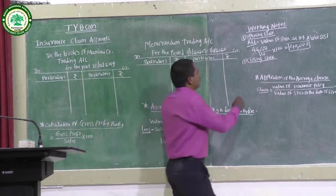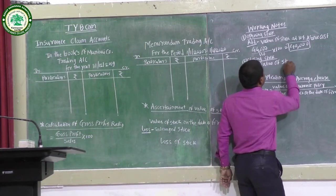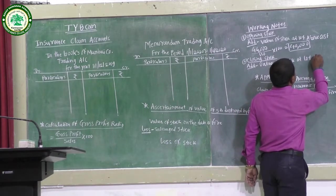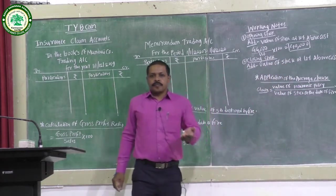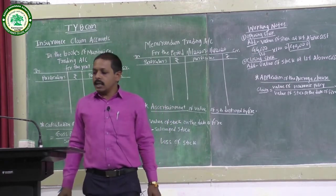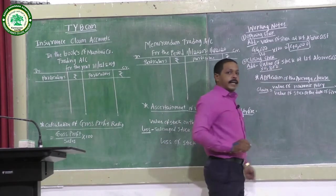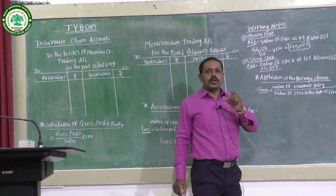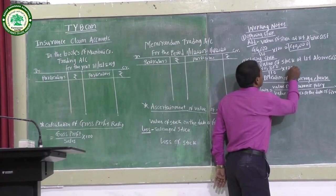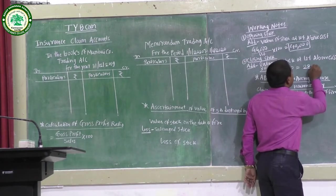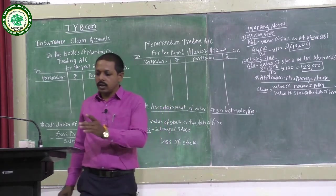Similarly, the closing stock is valued at 10% above cost. We convert closing stock to cost: 30,800 × 100/110 = Rs.28,000. So the closing stock at cost is Rs.28,000.